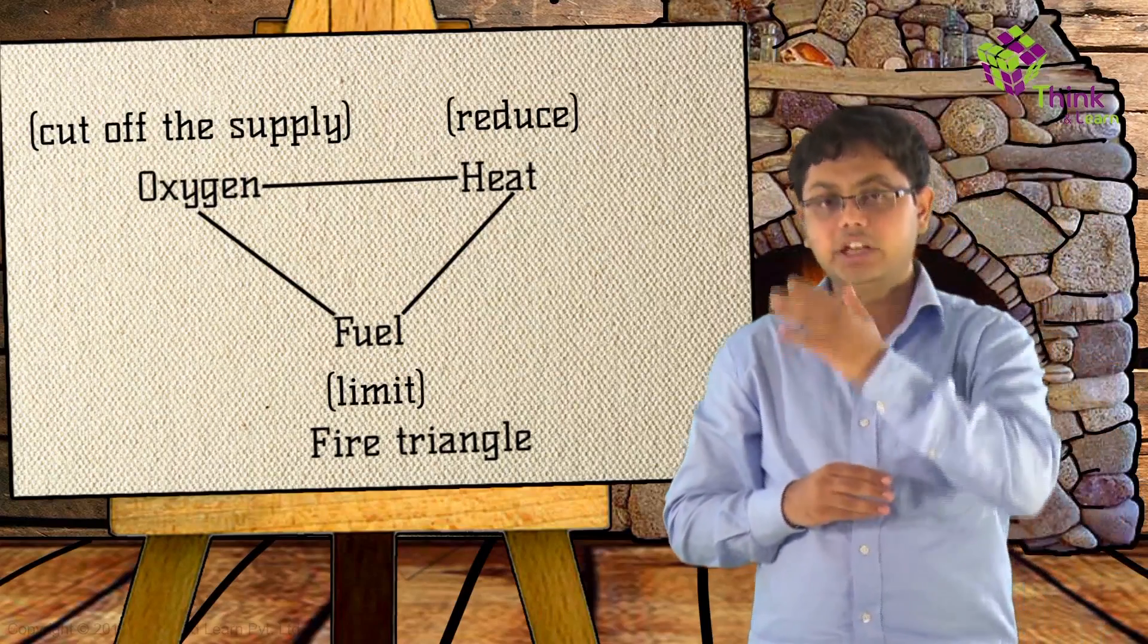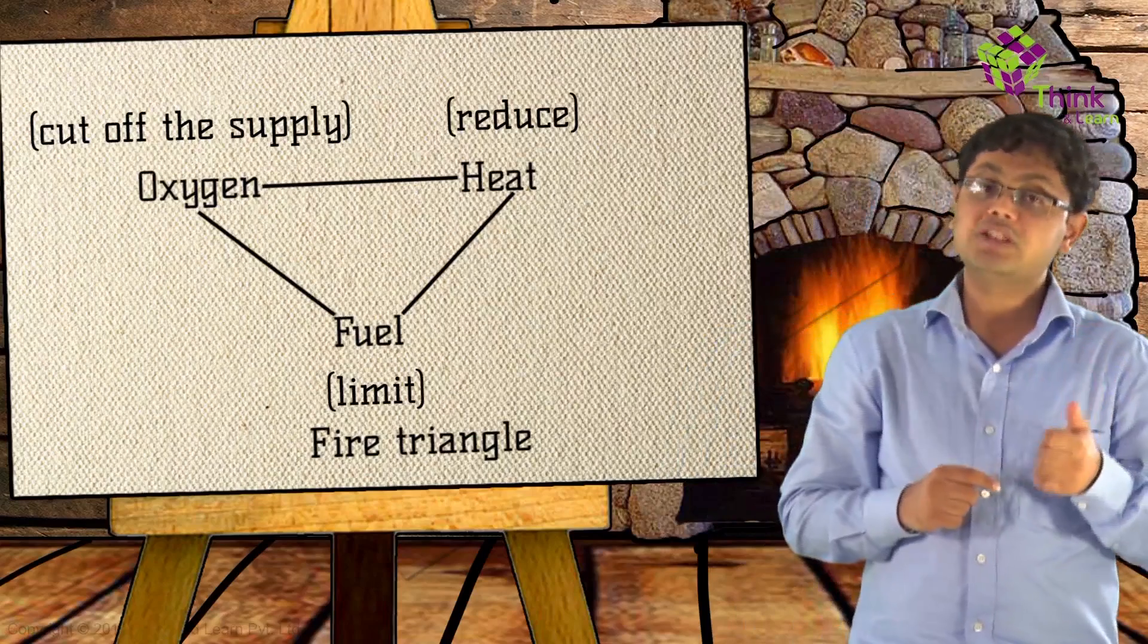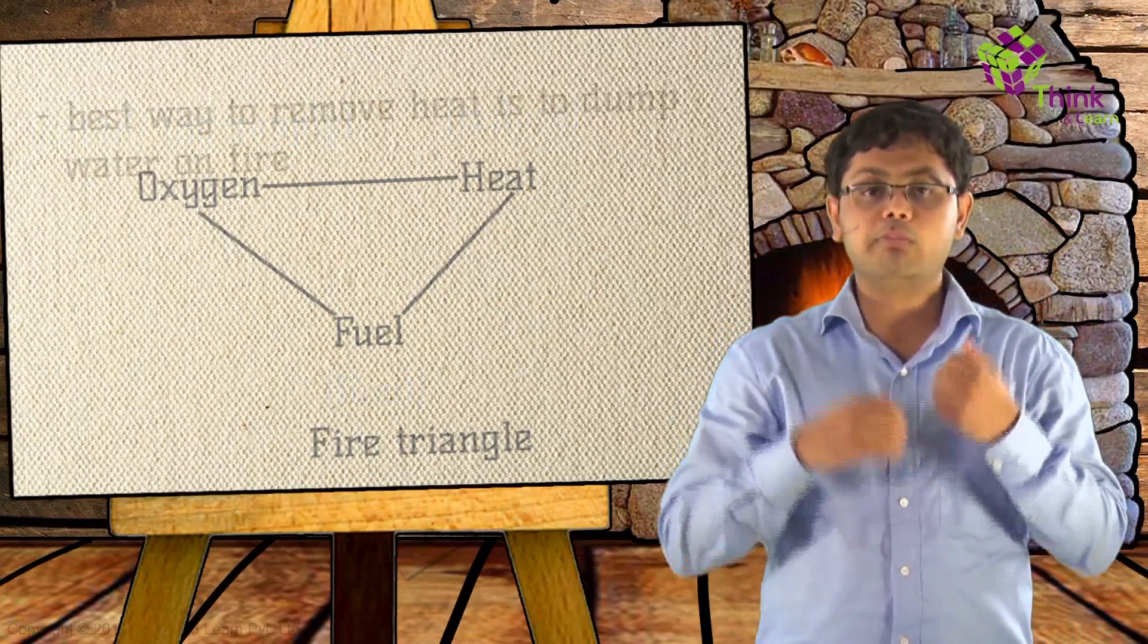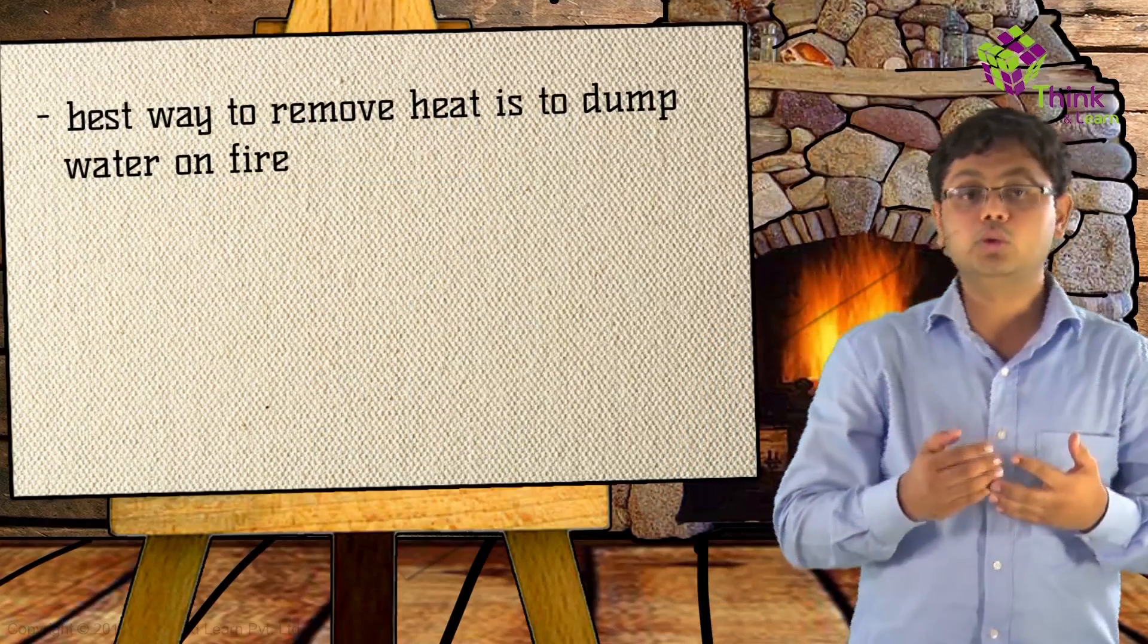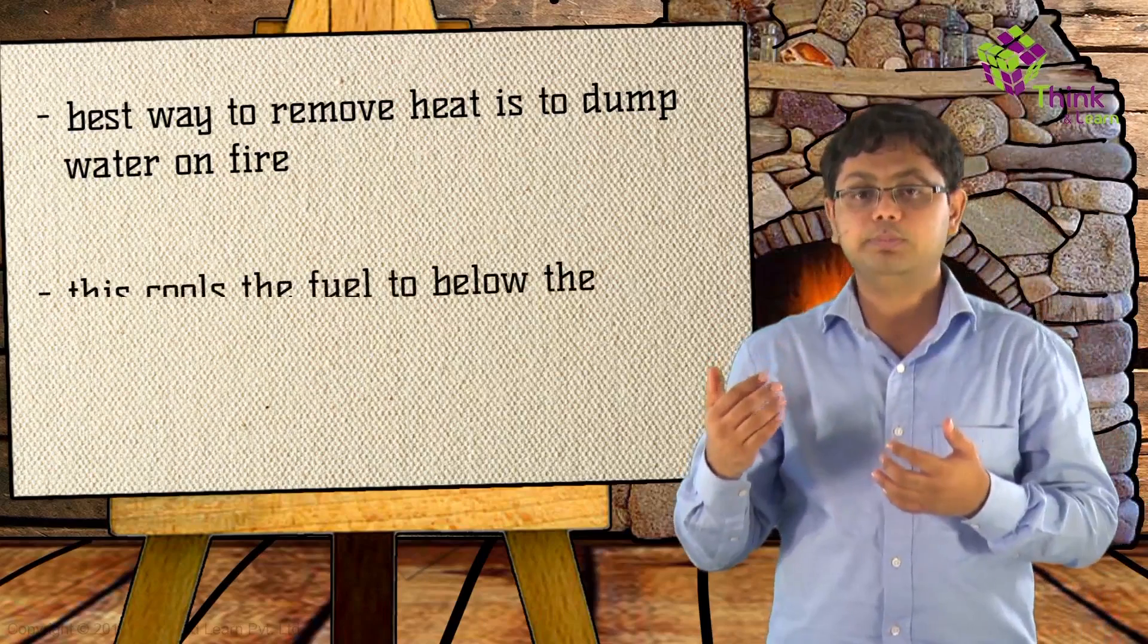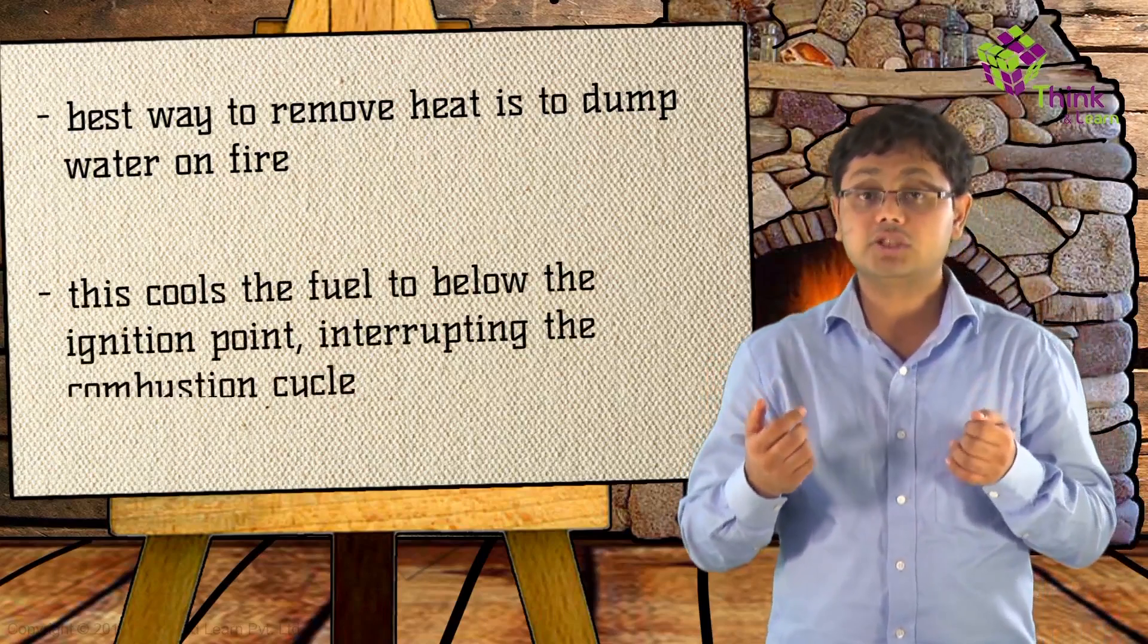Now, let's explore how we can do each of these three. The best way to remove heat is to dump water on the fire. This cools the fuel to below the ignition point, interrupting the combustion cycle.